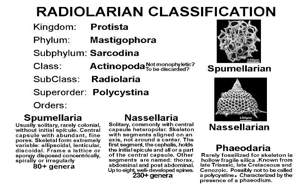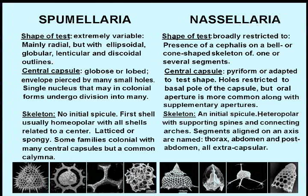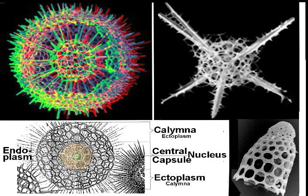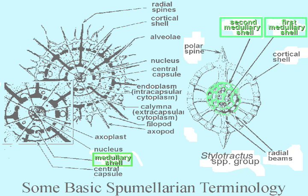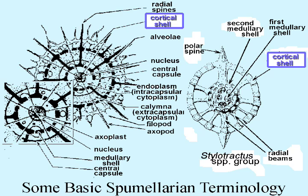As the tests of the Phaeodaria are hollow and extremely fragile, they are very rarely fossilized, so are not included in the following cursory view. All Spumellaria have a radial symmetry, commonly expressed as one or more perforate inner medullary shells pierced by regular patterns of holes called pores, and an outer cortical shell, also perforate, and commonly spined.